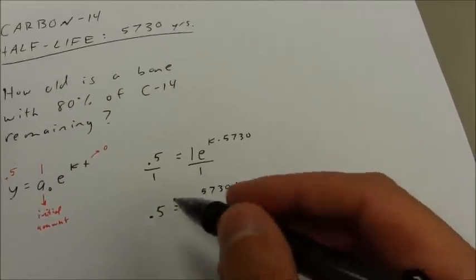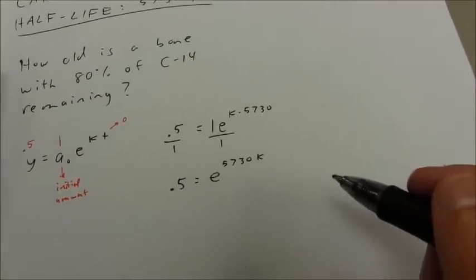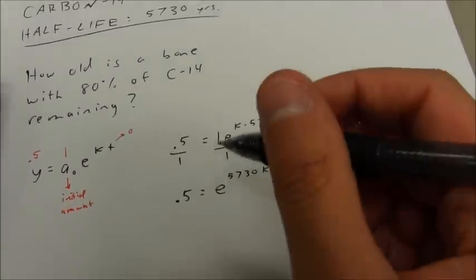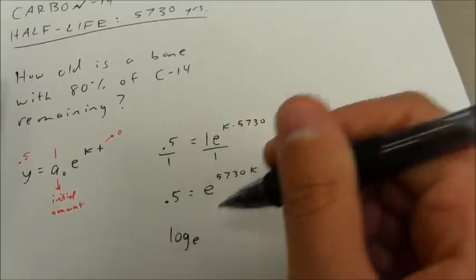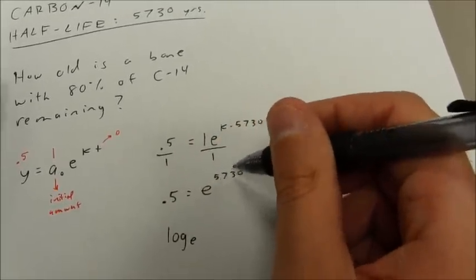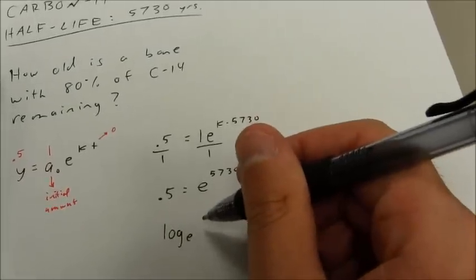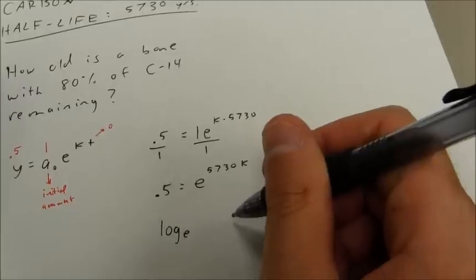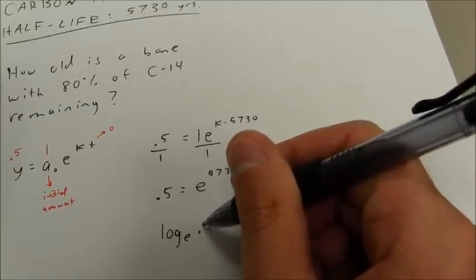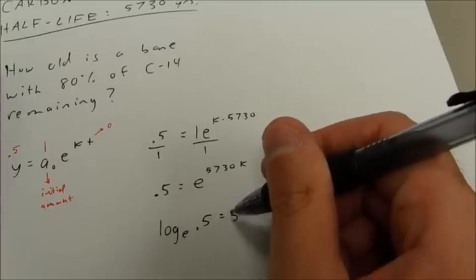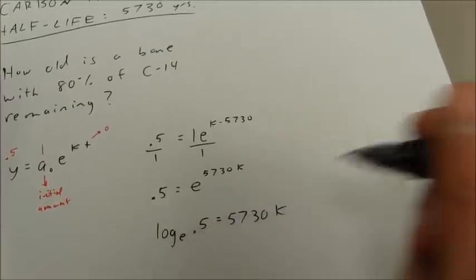Notice, I have a base exponent result, which means now I can convert to log form. That's going to be the log base e of... Remember, a log is equal to the exponent. So that is going to be log base e of 0.5 equals 5,730k.